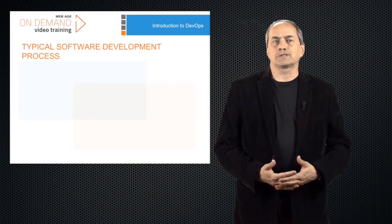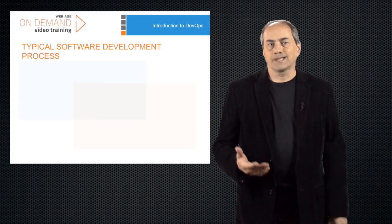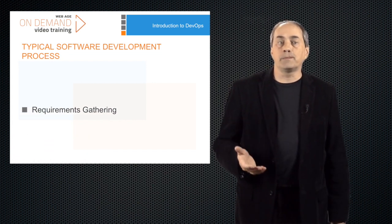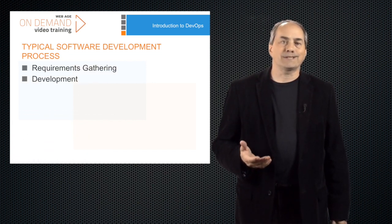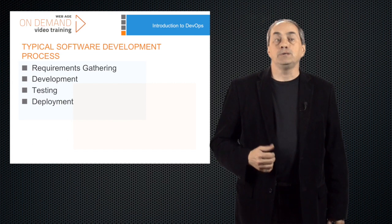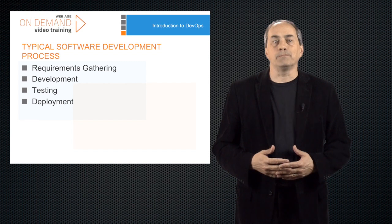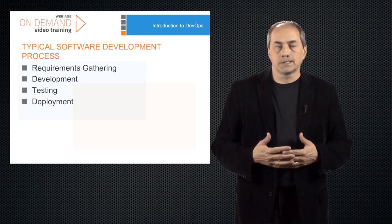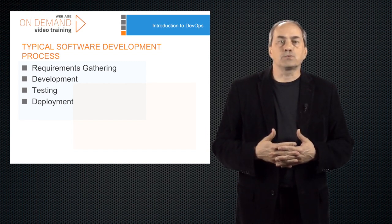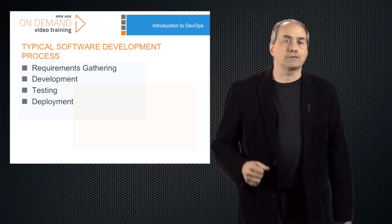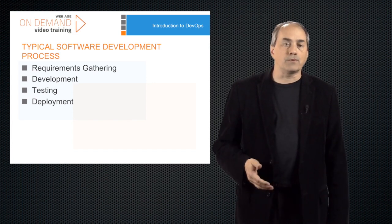We're probably all familiar with the traditional software development process. Here's one variation: we do requirements gathering, development, testing, and deployment. Usually we treat testing and quality assurance as part of development, even though the organization might be split into different groups. The operations function is where the software is deployed or put into service and users can start getting value from the software. Traditionally, development and operations have been separate activities done by separate groups, and they often seem to have competing goals.